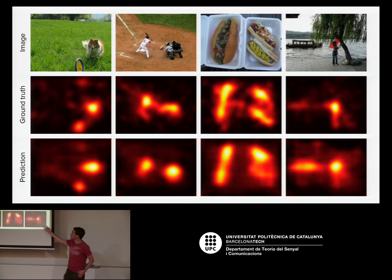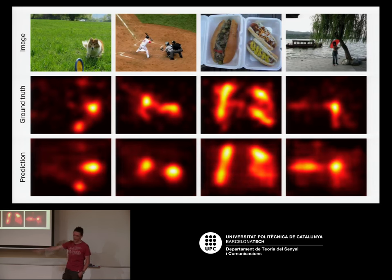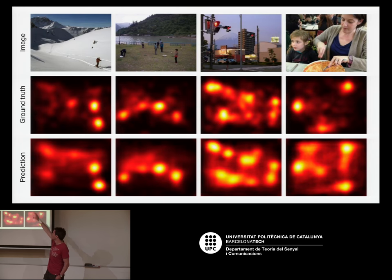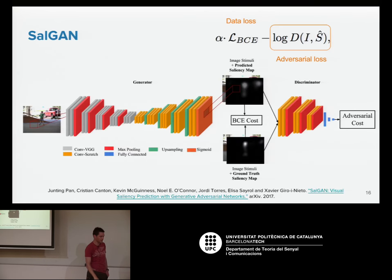Here are some results. Images are on top, the middle row is the ground truth — where people actually looked, averaged across multiple people — and our prediction is at the bottom. You can see it matches the ground truth pretty well, even for complicated scenes with multiple people or lots of traffic lights. This work was in the top five on the MIT benchmark for a while, but since then many other people started doing this, so it's gone down in the rankings.